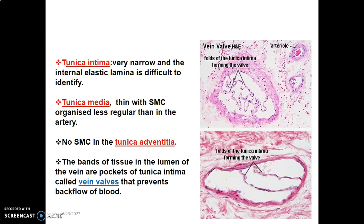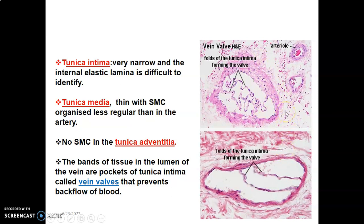Medium-sized veins have tunica intima, media, and adventitia, but the tunica intima is very narrow and the internal elastic lamina is very difficult to identify. The tunica media has smooth muscle cells, but they are less regular — unlike arteries where smooth muscle cells are concentric. The tunica adventitia has no smooth muscle cells, unlike large veins. The lumen also shows bands of tissue — these are pockets where the tunica intima invaginates to form valves, which ensure unidirectional flow and prevent backflow.